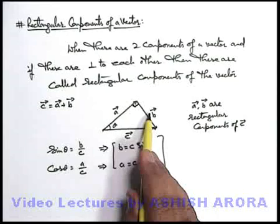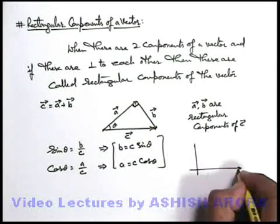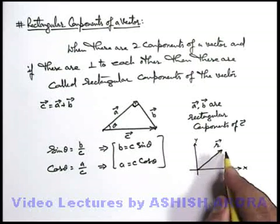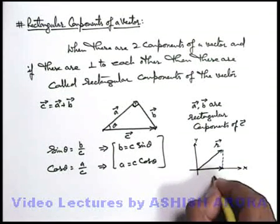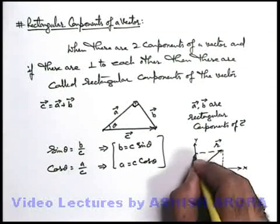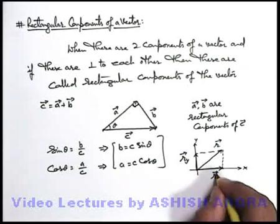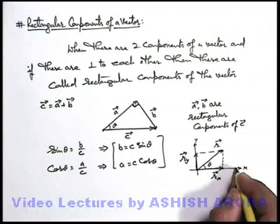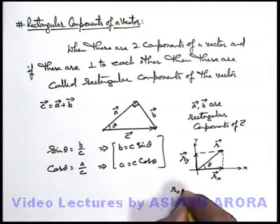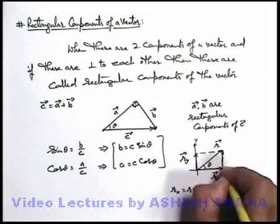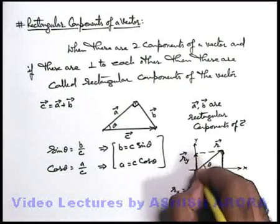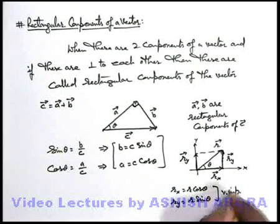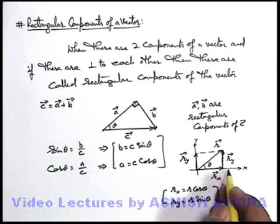We can also resolve any vector into two perpendicular components. In a normal coordinate system with x and y axes, if we have a vector r, this vector r can be resolved into two perpendicular components: one along the x axis written as r_x, and the other along the y axis written as r_y. The vector sum of r_x and r_y gives the main vector r. If this main vector r makes an angle theta with the x axis, then r_x has magnitude r·cosine theta, and r_y has magnitude r·sine theta. This is how we resolve a vector into two perpendicular components along x and y axes.